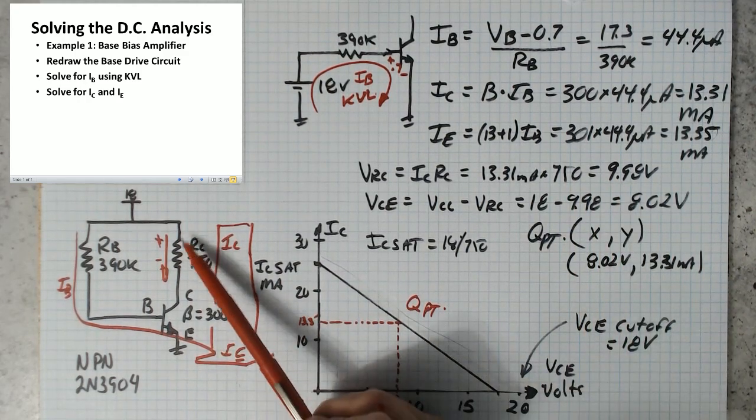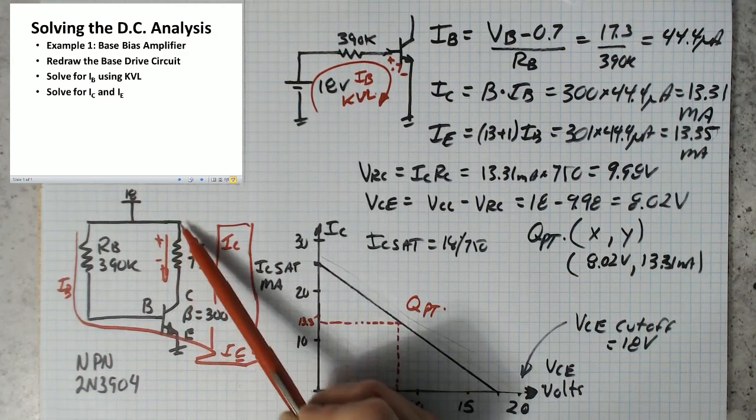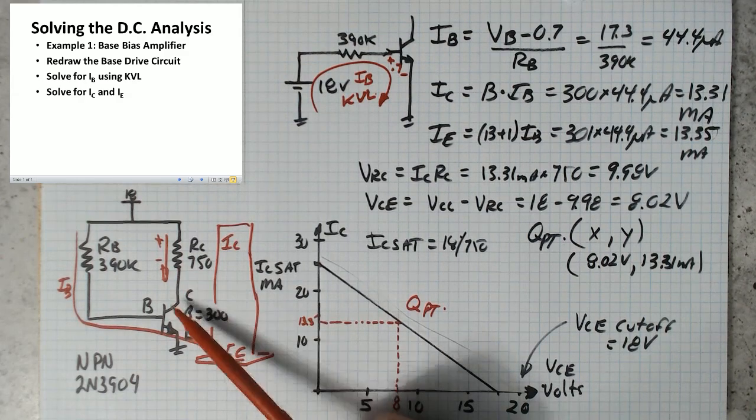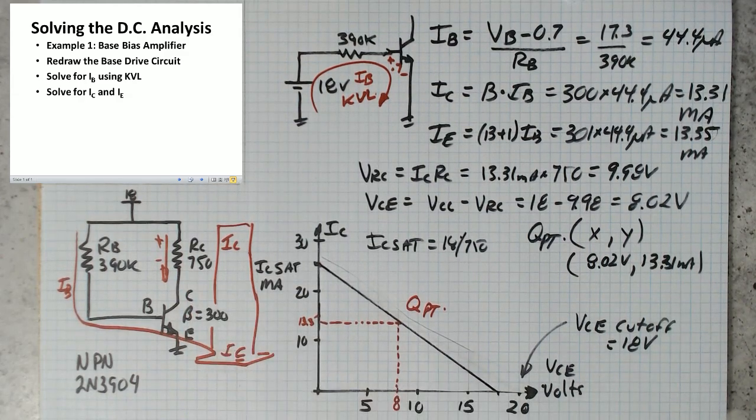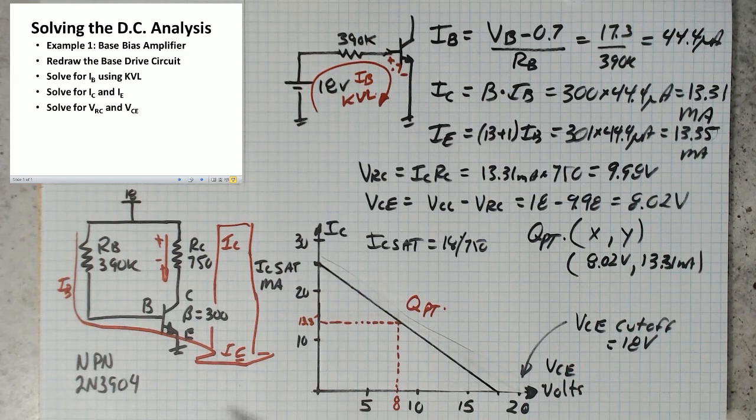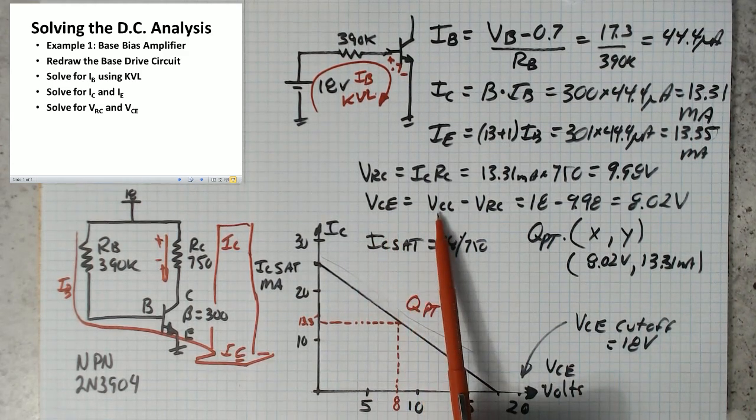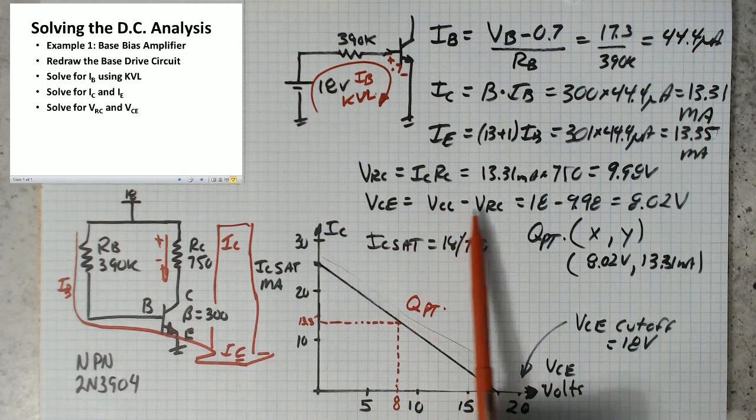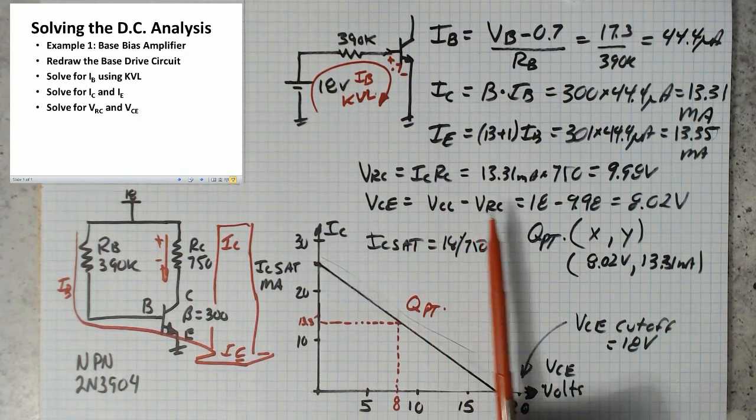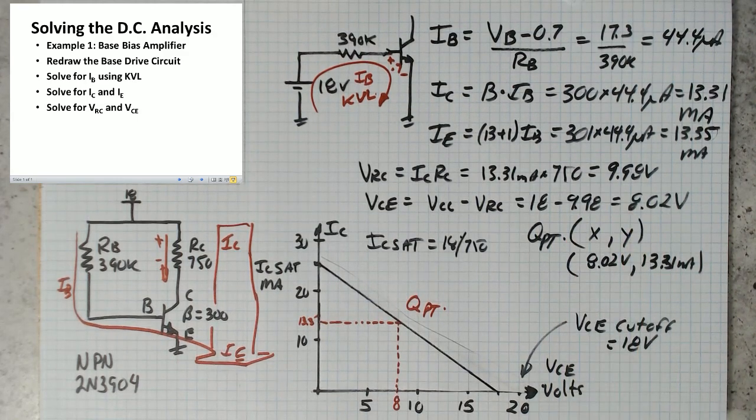So this guy has 10 volts across him. On one end it's got 18 and current is going that way and it drops about 10. So that's going to leave about 8 volts across the transistor. So to solve for VCE, we would say that VCE would be VCC, 18 volts minus the voltage across the resistor, which is 18 minus 9.98, which is 8.02 volts.